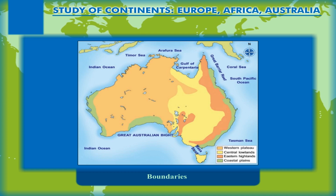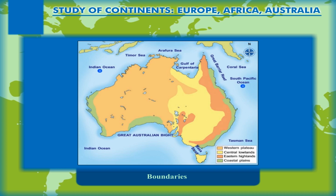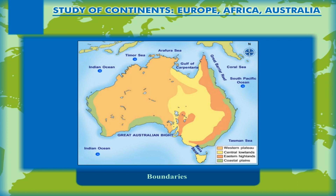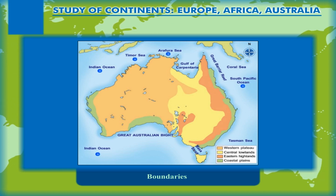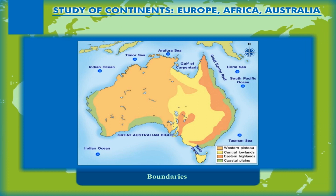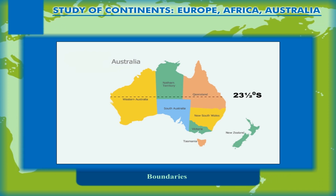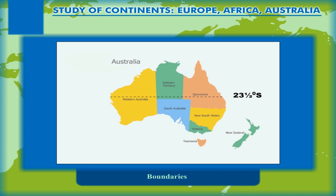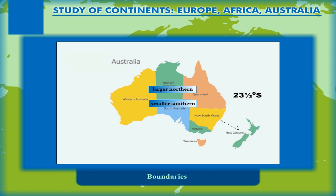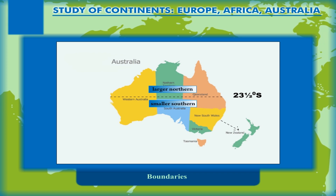Australia is surrounded by the Pacific Ocean to its east and Indian Ocean to its west and southwest. The continent is bordered by the Timor Sea and Arafura Sea in the north, Coral Sea towards the northeast, and Tasman Sea to its southeast. The continent of Australia is divided into two parts by the Tropic of Capricorn, 23 and a half degrees south, a larger northern and smaller southern part. Australia along with New Zealand and other adjoining islands is known as Australasia.